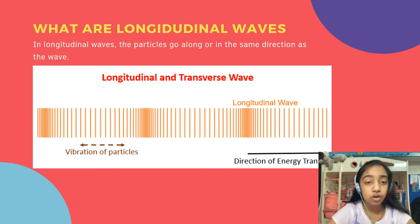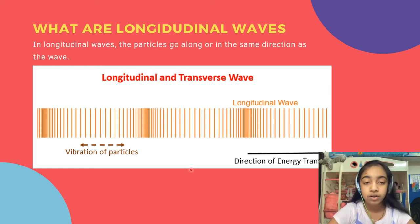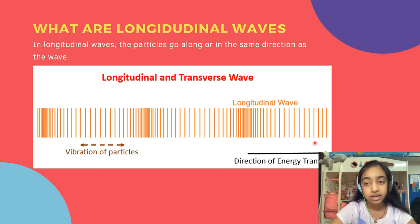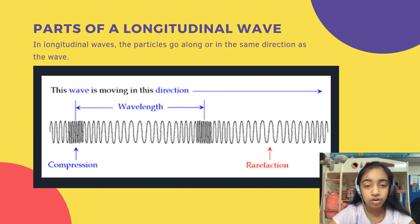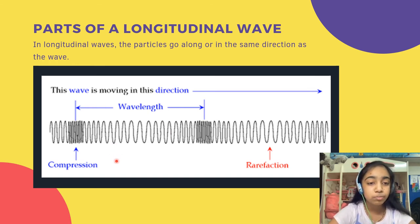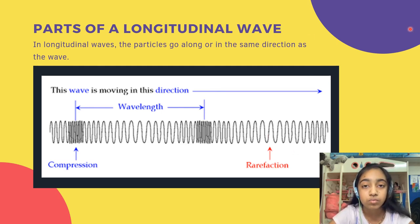Now the second subtype: longitudinal waves. In longitudinal waves, the particles go along or in the same direction as the wave — they do not move up and down like in transverse waves. Parts of a longitudinal wave: there are mainly three parts — compression, rarefaction, and wavelength. Compression is where the particles come really close to each other, and at this point the energy is maximum. Rarefaction is where the particles go apart and the energy is low. The wavelength is the distance between one compression and another.